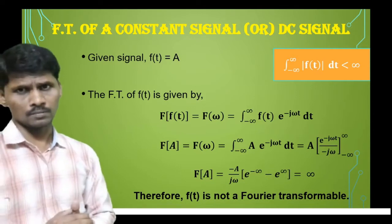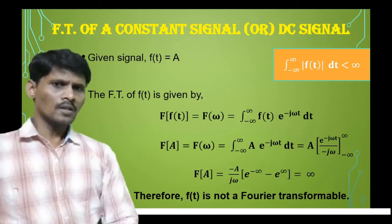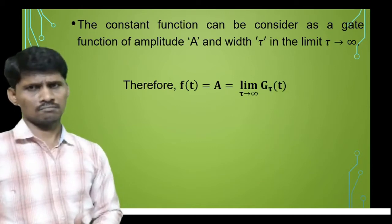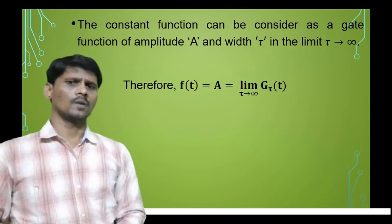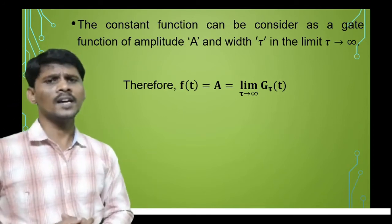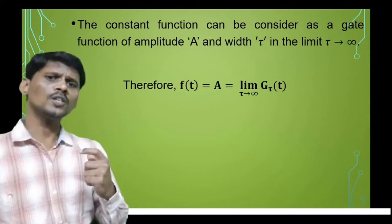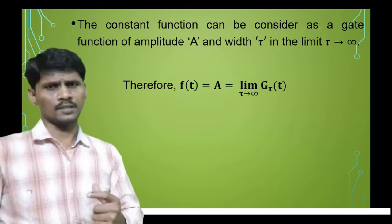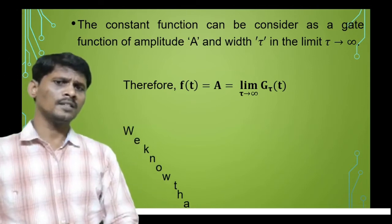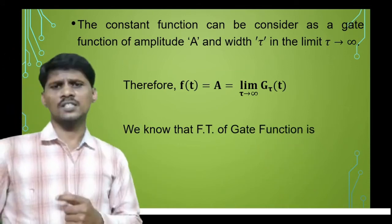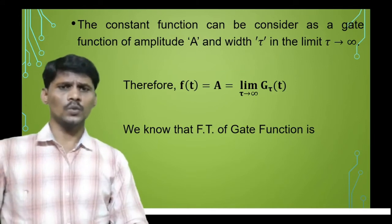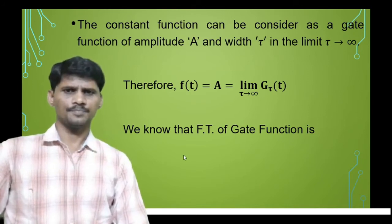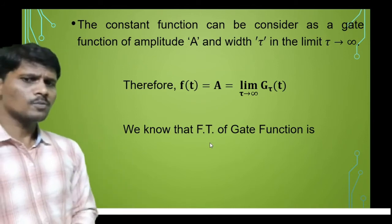How do we calculate the Fourier transform of a constant signal? According to the direct definition of the Fourier transform, the constant function is not Fourier transformable, but it will have some value. To determine that value, the constant function is considered as a gate function — also called a rectangular pulse function. The constant function can be considered as the gate function of amplitude A and width τ in the limit as τ tends to infinity. That is, f(t) equals the limit as τ→∞ of g_τ(t).